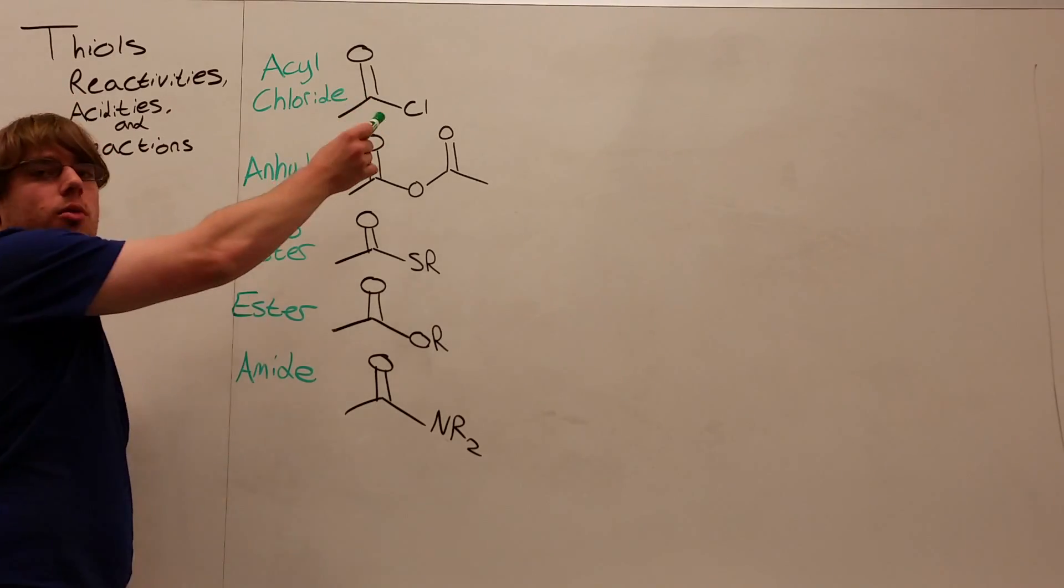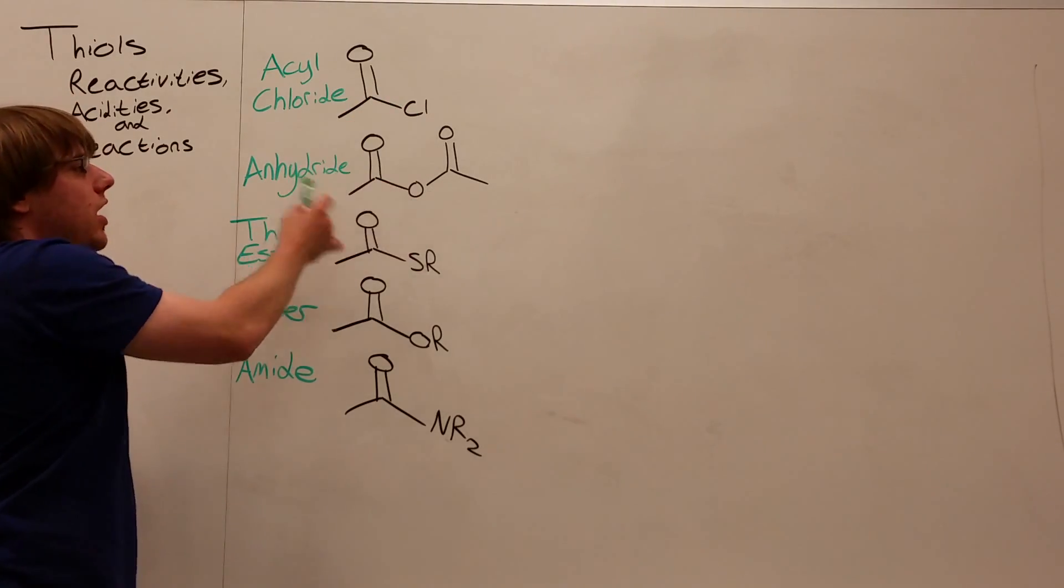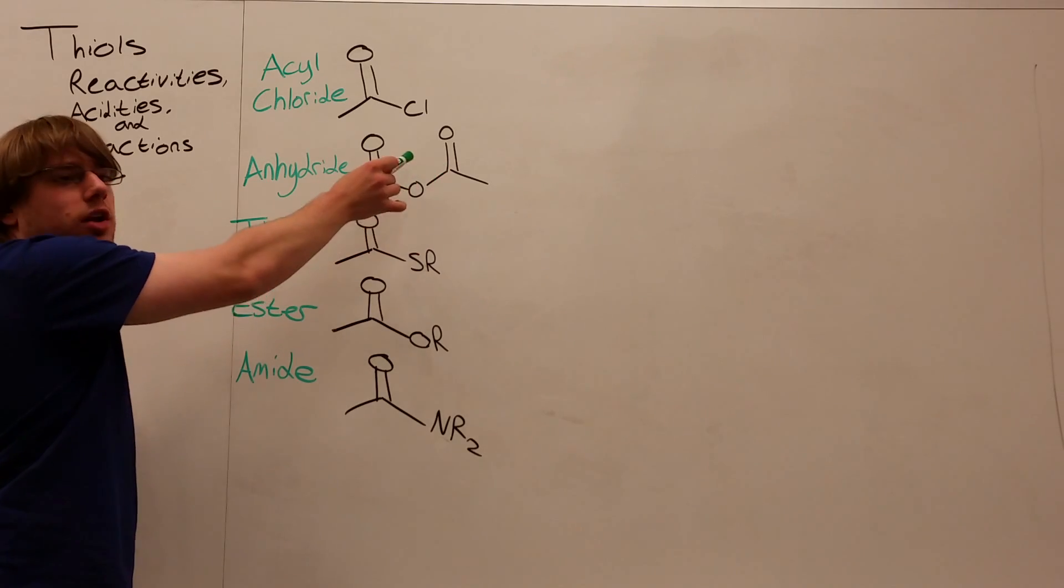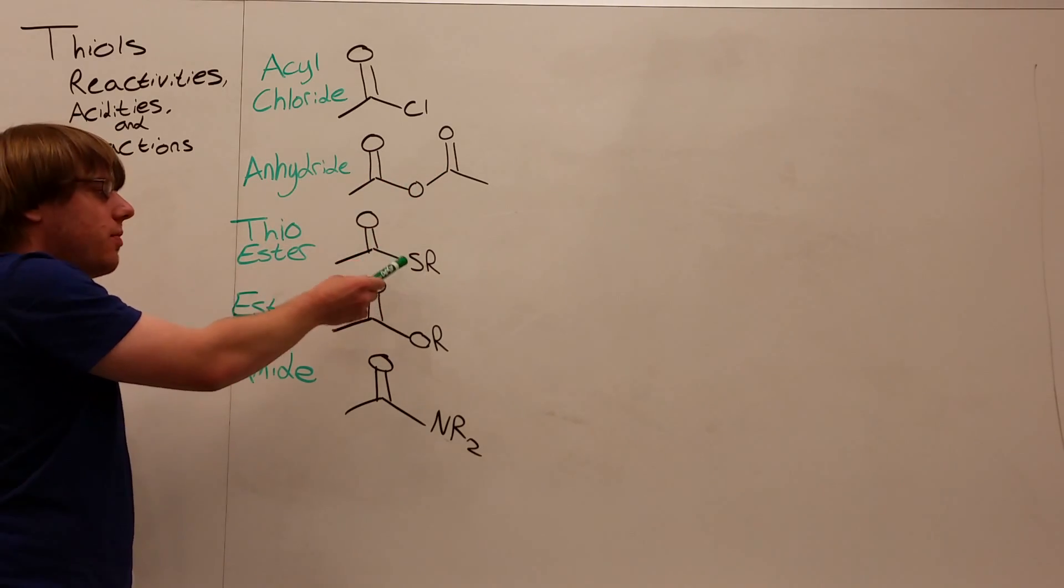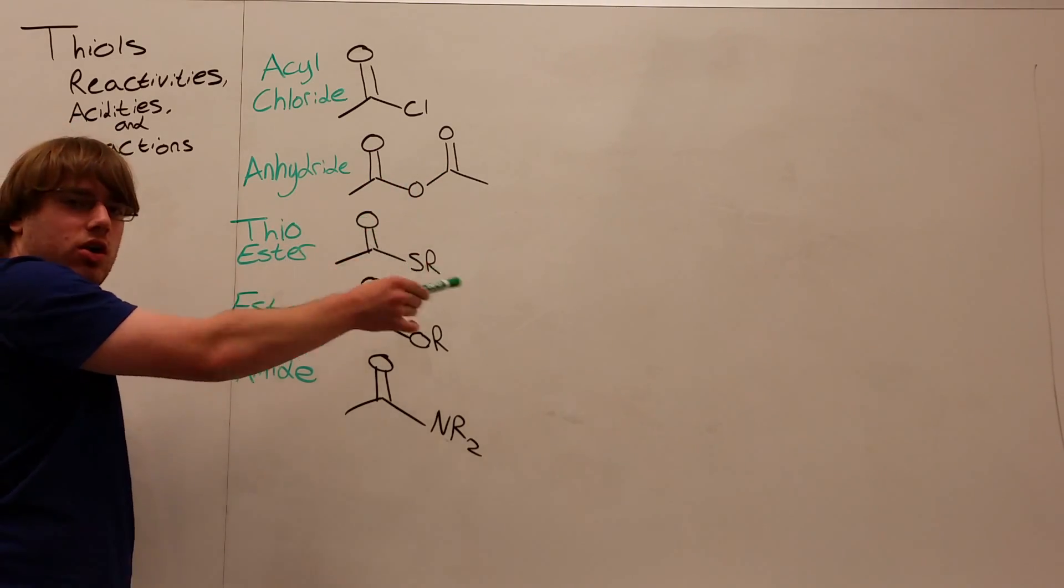The acyl chloride is when you have a carbonyl with a Cl on it, and anhydrides are where you have two carbonyls that share an oxygen. Thioesters, now that we've learned them, is a carbonyl that has an SR group.